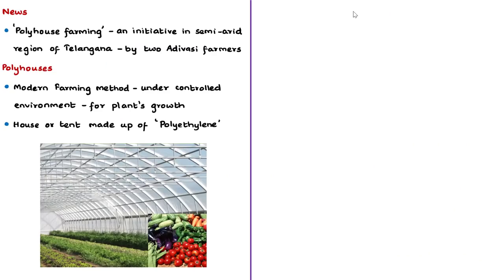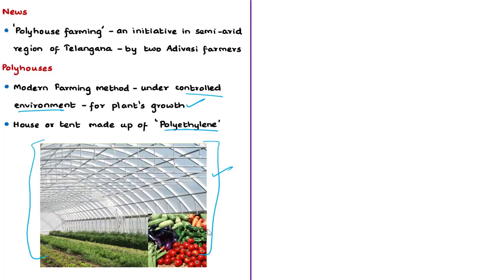A polyhouse is one of the modern farming methods that uses a controlled environment for the growth of plants. It is a structure made of transparent material — polyethylene. In a polyhouse, the plants are grown in a well-controlled manner, but the size of the structure varies from small sheds to industry-sized buildings according to the purpose.